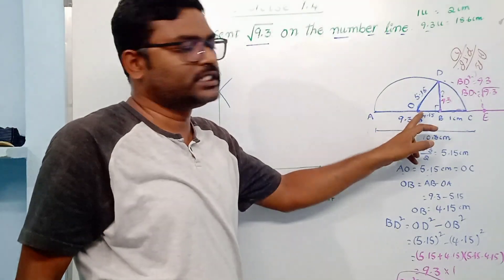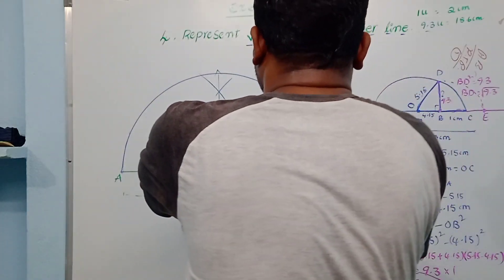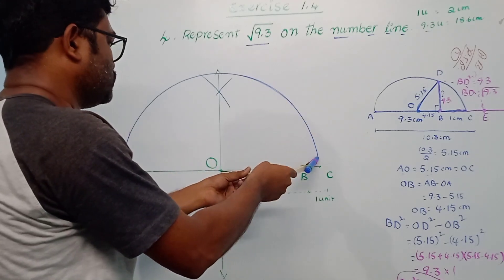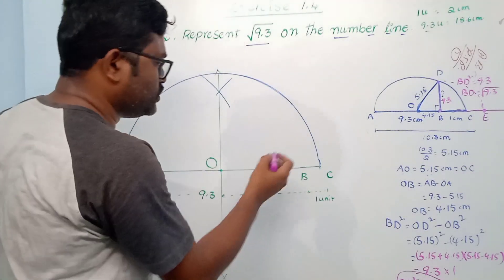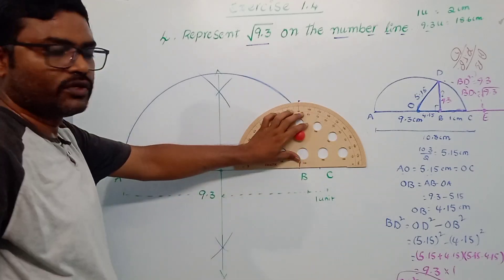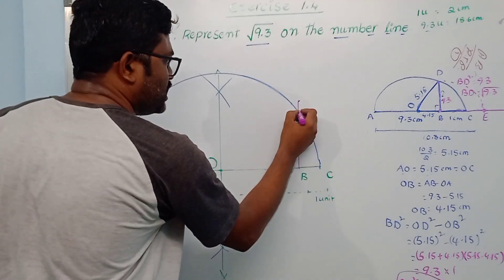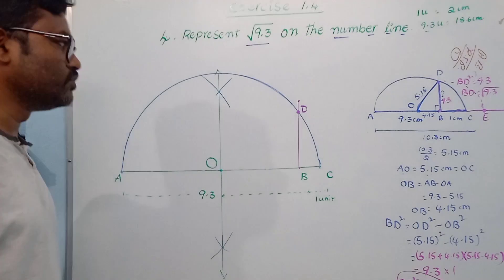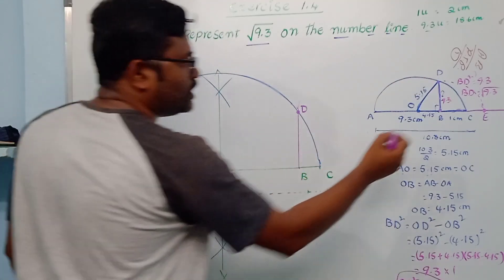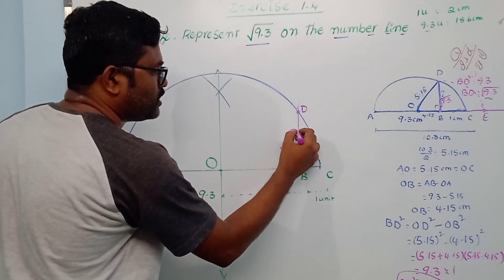Taking O as center, draw a semicircle. At point B, draw a perpendicular to the line which intersects the semicircle at point D. This is the point where the perpendicular meets the circle — label it D. BD is equal to the square root of 9.3.